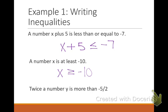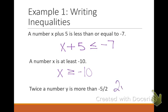Twice a number — how can I write that? Two y, because y is the variable. It says is more than, so what symbol needs to face the y? It just says more than, so it's just a greater than symbol — no equal to. So: 2y > −5/2.